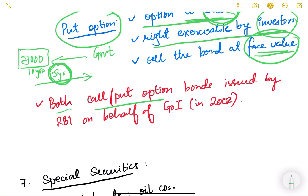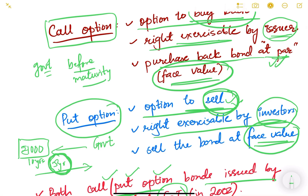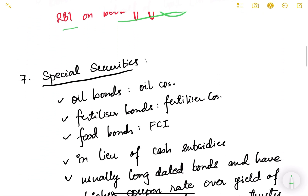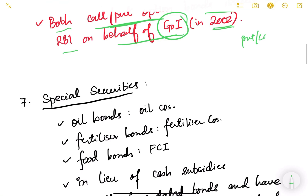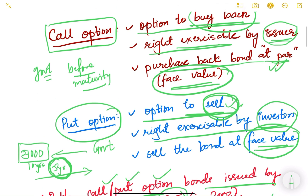In India, both call and put option bonds were issued by RBI on behalf of the Government of India in 2002. So this is not just theoretical — it has been done practically in our country. We will study put and call options in more detail when we start the equity markets. To summarize: call means the issuer can call back the security, and put option means the investor can sell the security before maturity at face value.